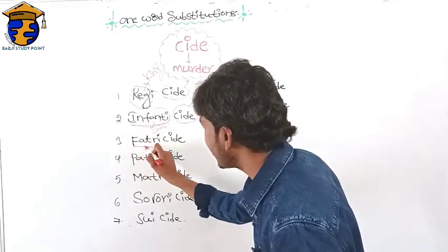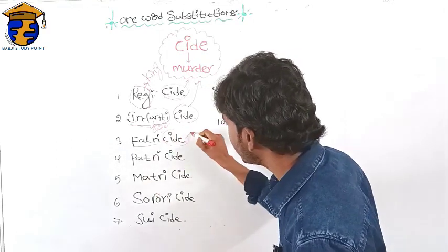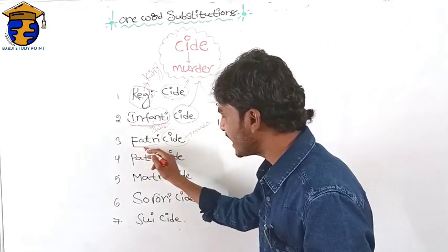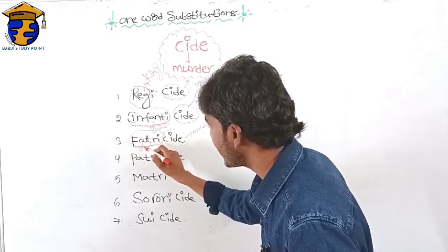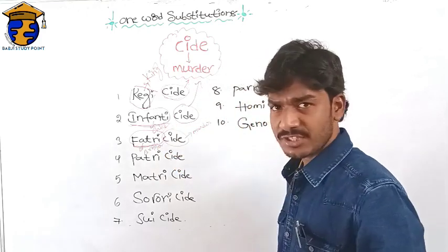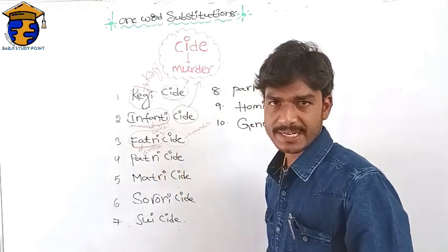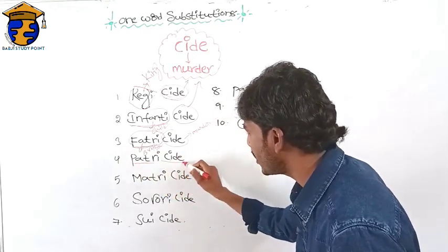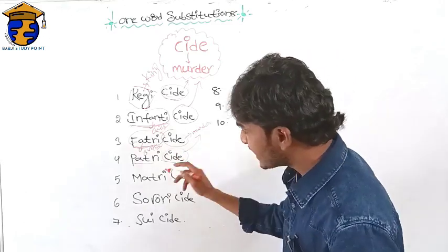Next one: fratricide. You know the suffix '-cide' means murder. What is the meaning of 'fratri'? 'Fratri' means brother. So the murder of a brother is called fratricide.